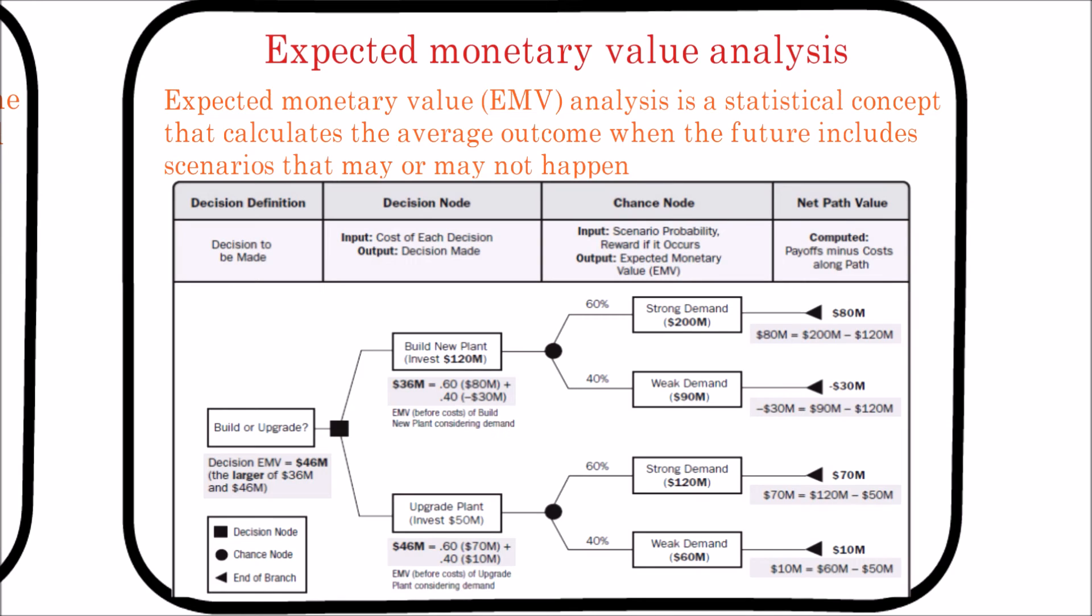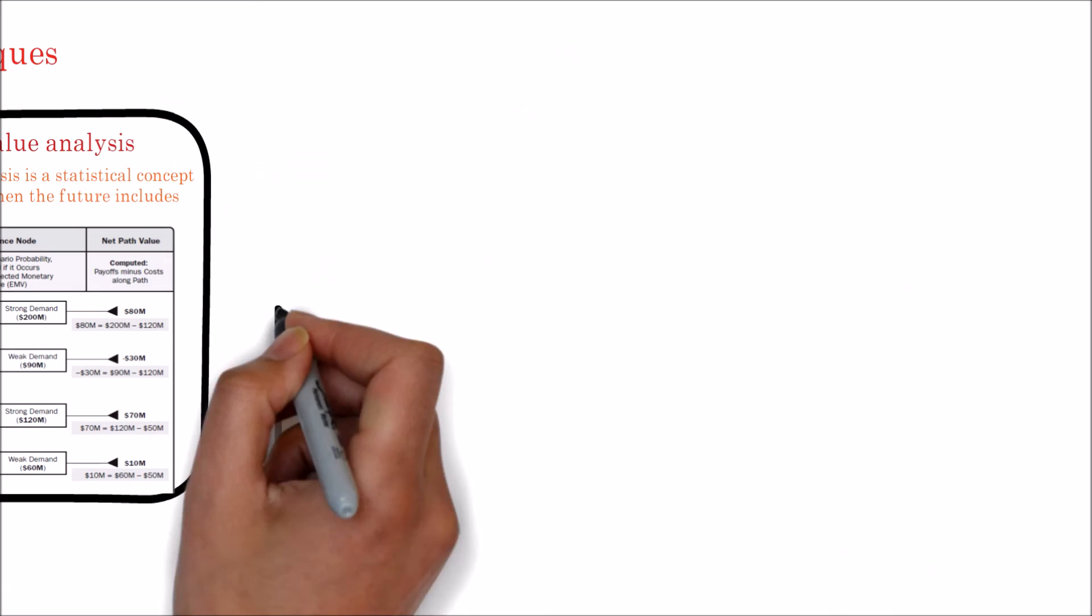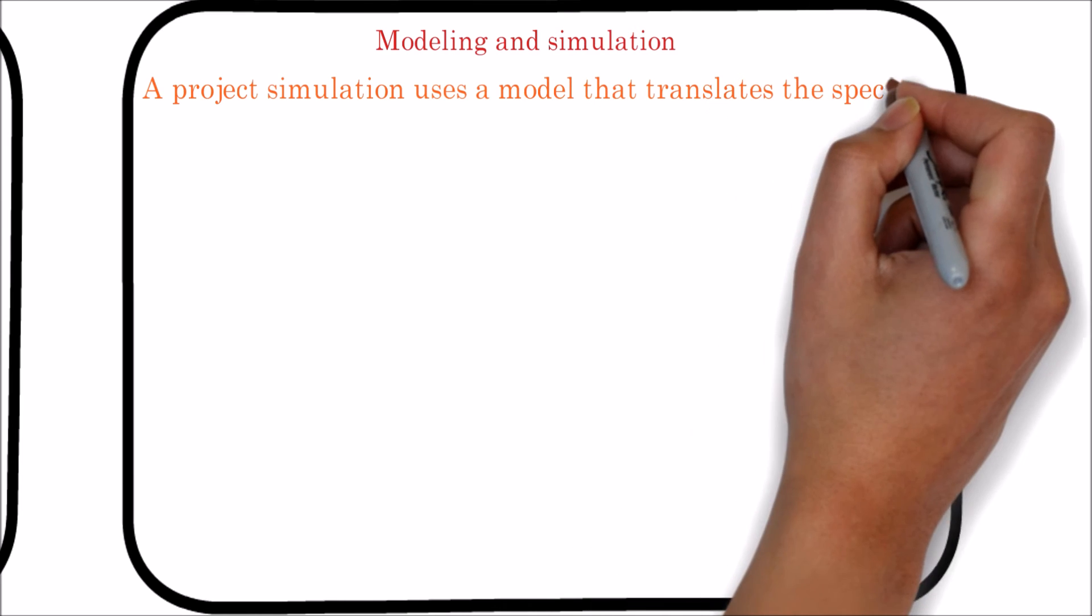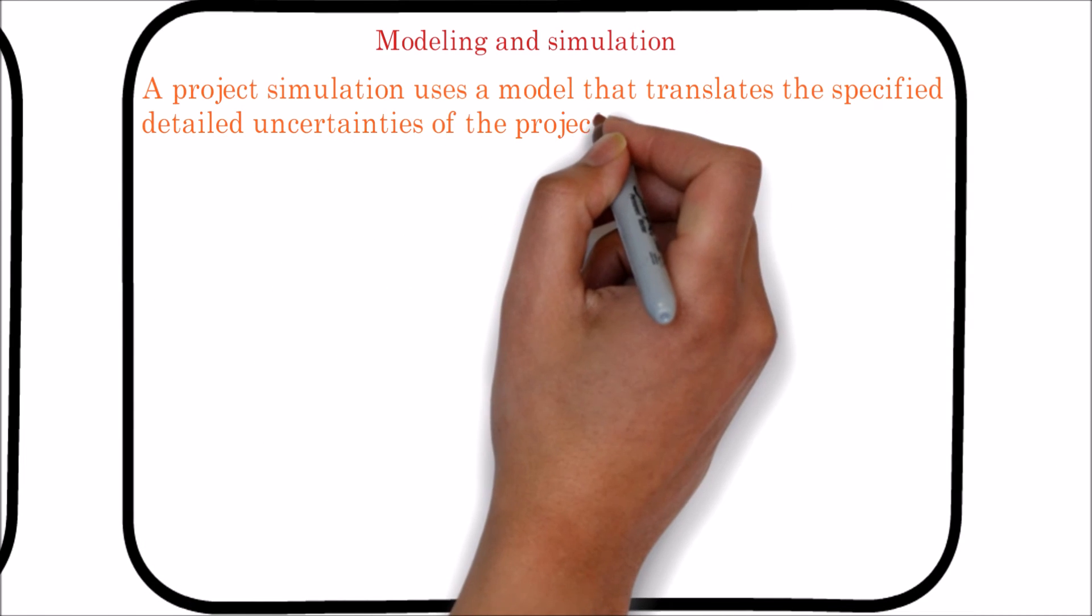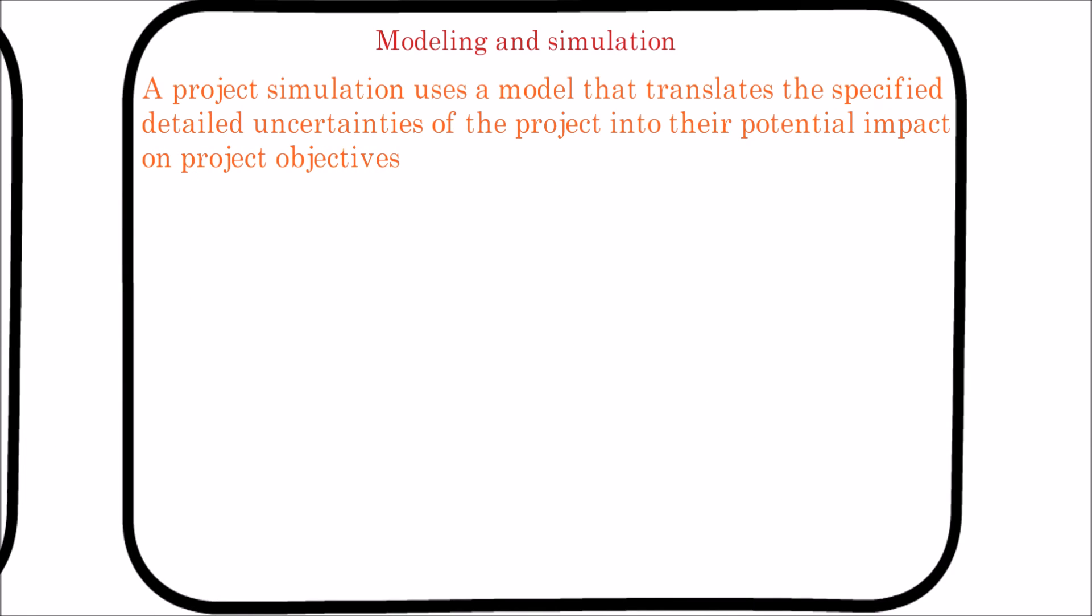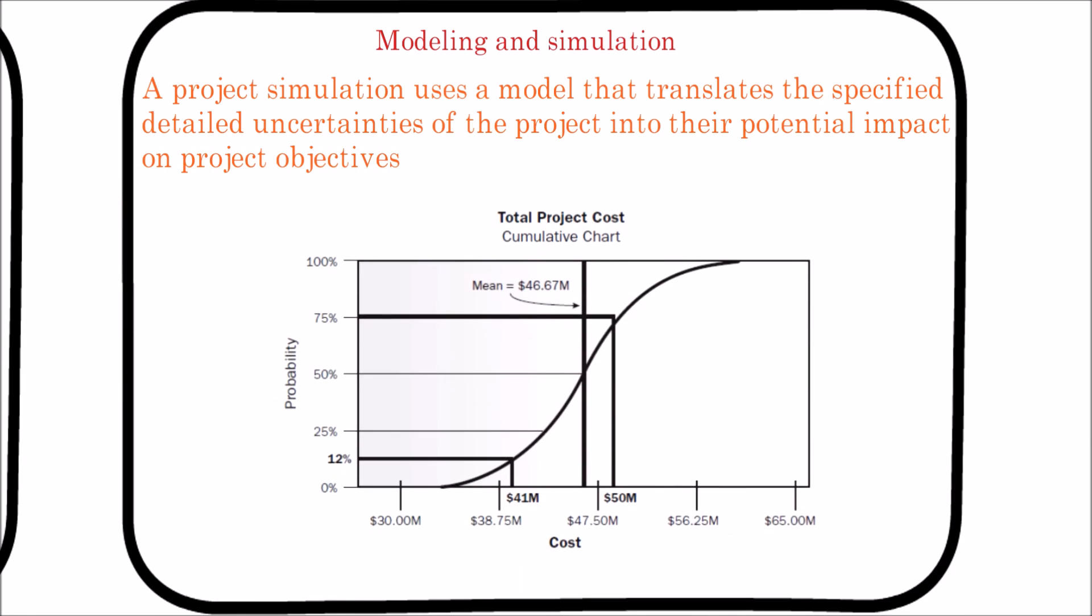Modeling and Simulation. A project simulation uses a model that translates the specified detailed uncertainties of the project into their potential impact on project objectives. Simulations are typically performed using the Monte Carlo technique. In a simulation, the project model is computed many times, with the input values chosen at random for each iteration from the probability distributions of these variables.